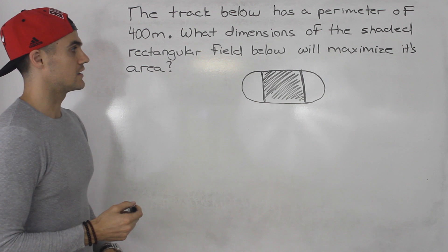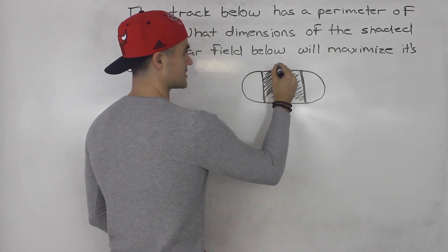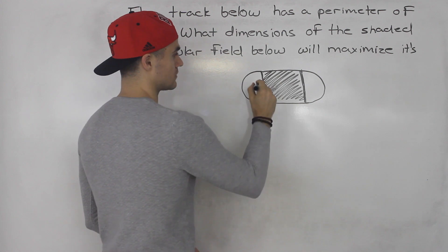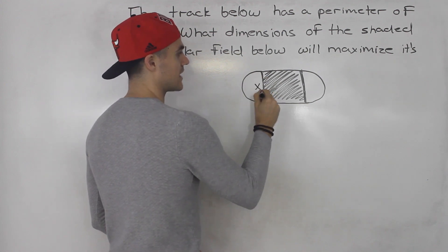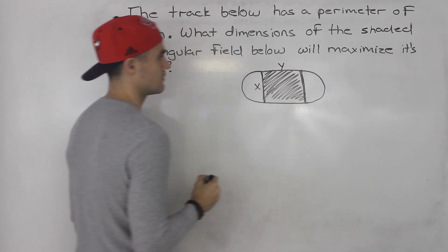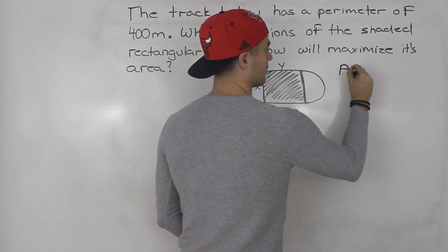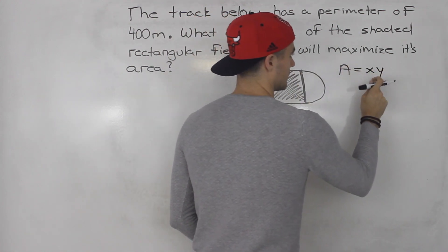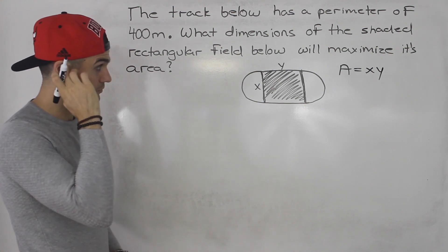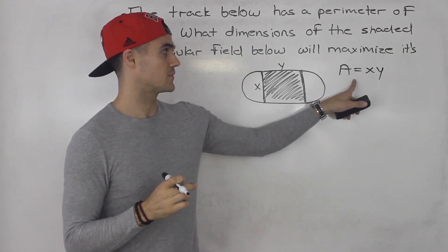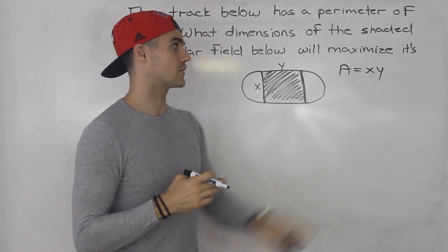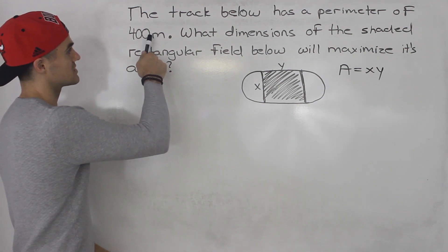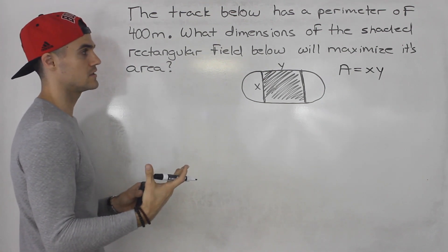So where do we even begin here? Well, I say that we start off by labeling the width and the length of the rectangular field. So let's say we let the width be x and then the length be y. So then we know area of that rectangular field is going to be x times y. So that's where we're going to have to try to maximize. The problem right now is that this area function that we have is in terms of two variables, and in order for us to be able to work with it, it has to be in terms of one variable.